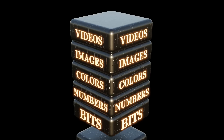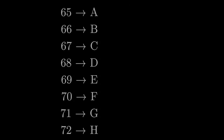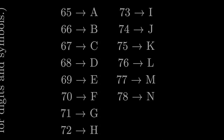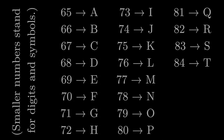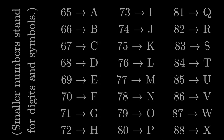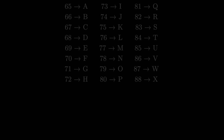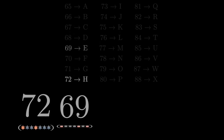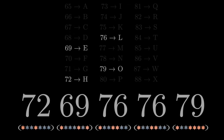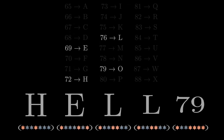Before we get to colors, let's use our ability to represent numbers to figure out a representation for text. We can store text by assigning each character its own number, then store a sequence of characters as a sequence of their corresponding numbers. So 72, 69, 76, 76, 79 represents "hello".